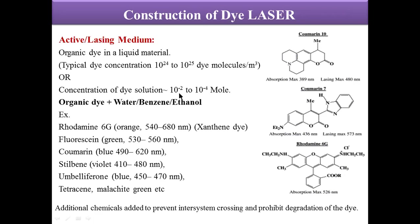A typical concentration of the dye in the solvent ranges from 10 to the power minus two to 10 to the power minus four mole. The organic dye is the solute and the liquid is the solvent — together they form the active medium, with the active centers being the organic dyes. Examples of organic dyes include rhodamine-6G, fluorescein, stilbene, and tetracene, all emitting wavelengths in different regions. Additional chemicals are also added to prevent inter-system crossing and to prohibit the degradation of the dye.